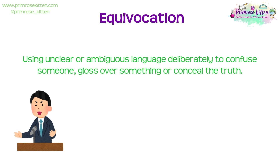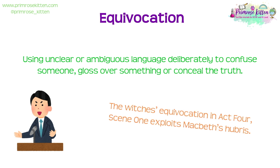Even more obvious examples of equivocation are when the witches cleverly trick Macbeth in Act 4, Scene 1, making him believe he will be safe unless the forest moves up the hill. He thinks that's impossible, but the way they've worded it means he doesn't consider that soldiers might use it as camouflage. Ultimately, trickery, deceit and equivocation appear constantly throughout the play, so these ideas need to be understood. In a sentence: 'The witches' equivocation in Act 4, Scene 1 exploits Macbeth's hubris.'